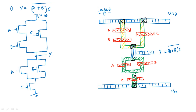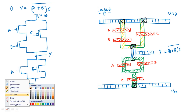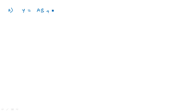This is the layout diagram for A plus B into C whole bar. Now let us consider the second example, which is most commonly used in the examination: Y is equal to AB plus C into D whole bar.